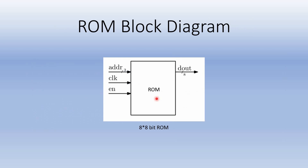This is the block diagram of ROM. It is an 8-bit by 8-bit ROM, meaning it has 8 locations and can store 8-bit data at each location. It contains 4 ports — 3 input ports and 1 output port. The addr input port is 3 bits wide, as 3 bits are sufficient to locate 2 to the power 3, that is 8 locations. CLK is for the clock cycle. EN is the enable pin — if it is 1 we can read data; otherwise we cannot. DOUT is the 8-bit output data port.